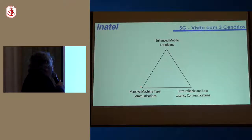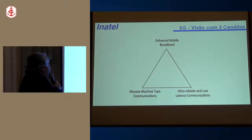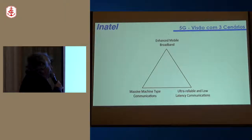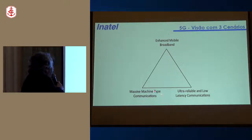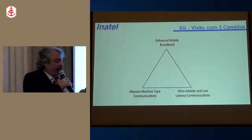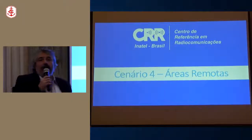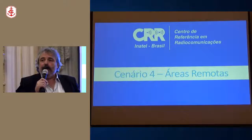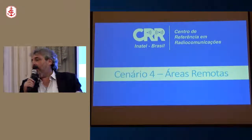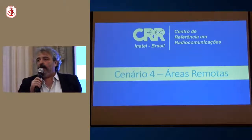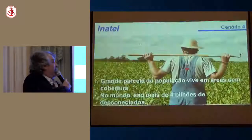Esses três cenários formam o triângulo normalmente visto na literatura como visão do 5G: maior taxa de transmissão, IoT, e comunicações de baixa latência e ultra confiáveis. O que está sendo deixado de lado nessa discussão é o cenário de 5G para áreas remotas e rurais, que tem sido trabalhado e discutido com bastante profundidade no projeto 5G Brasil.